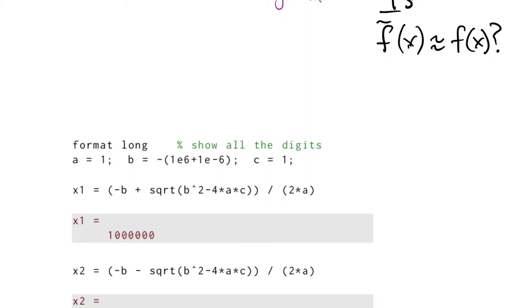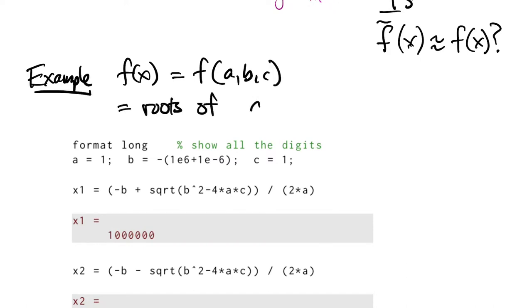Here's an example we started with in the last section. Let's let the problem be finding the roots of a quadratic polynomial. The data in this problem are the coefficients a, b, and c, and the solution are the two roots that we compute. Here's an example choosing a, b, and c. These are chosen so that the two roots are exactly 10 to the sixth and 10 to the negative sixth.